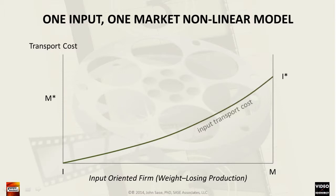We begin by graphing an input transport cost function. This function increases at an increasing rate as we leave the vineyard and approach the market. We could assume that moving a truck filled with fresh grapes into a densely populated area with crowded surface streets will gradually slow the process and increase the cost per mile. If production were to take place at the market location, the input transport cost would reach its maximum of point I*.